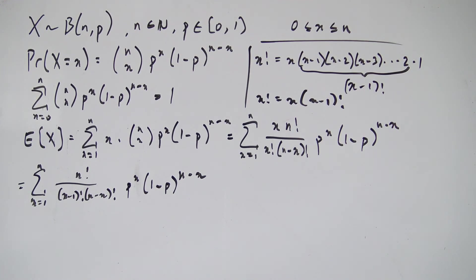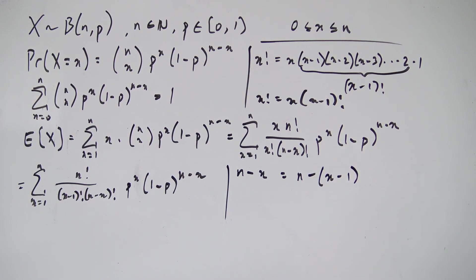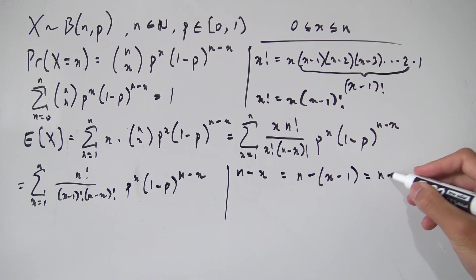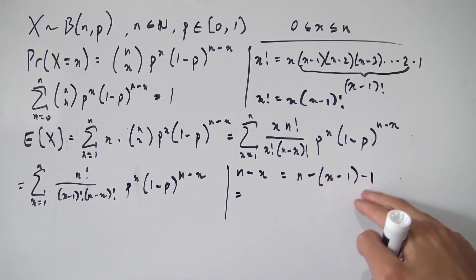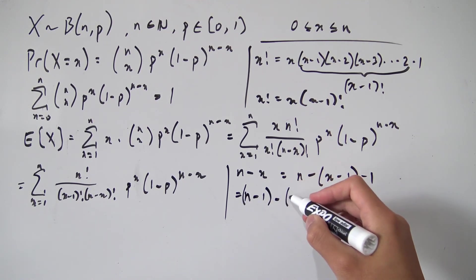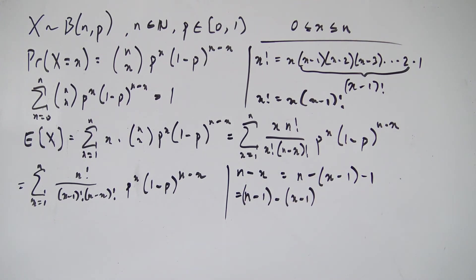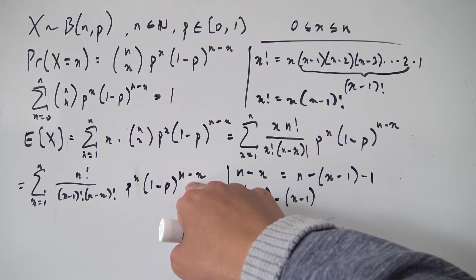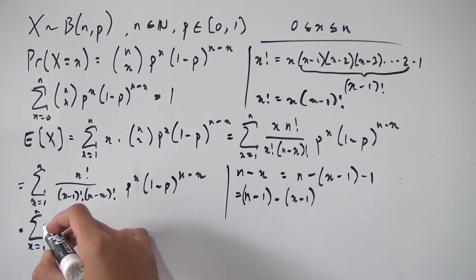It'd be nice to turn all the X's into X minus 1. Looking at N minus X factorial: we'd like it to be N minus X minus 1, but we can't just throw in a negative 1 there, since that would give N minus X plus 1. To counter that, we subtract 1 from the other side, giving us N minus X again. Rearranging, N minus X equals N minus 1 minus X minus 1 — the exact same thing. We plug that into our sum, replacing the N minus X factorial with N minus 1 minus X minus 1 factorial, and the exponent on 1 minus P likewise.